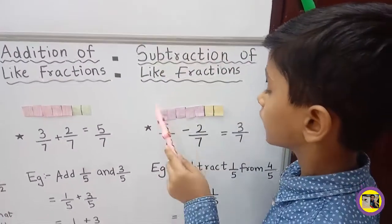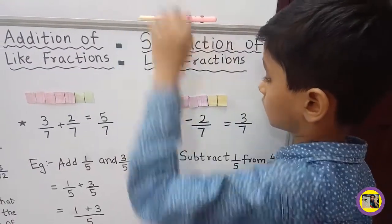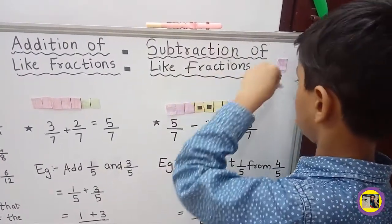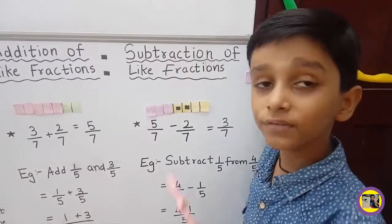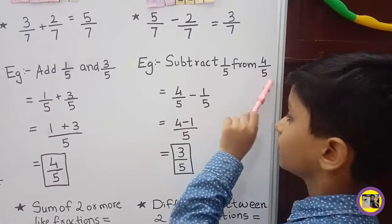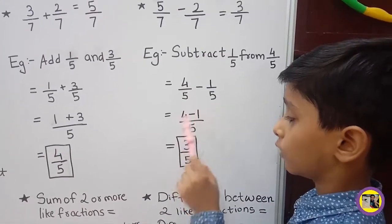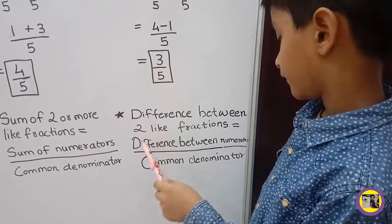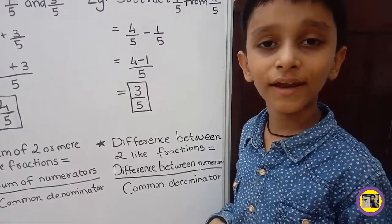Subtraction of Like Fractions: There are a total of 7 pieces and 5 are shaded. Now we have to remove 2 pieces. There remain 1, 2, and 3. The answer is 3 upon 7. For example, subtract 1 upon 5 from 4 upon 5. This equals 4 upon 5 minus 1 upon 5, which equals 4 minus 1 upon 5. The answer is 3 upon 5. The difference between 2 like fractions is equal to the difference between the numerators upon the common denominator.